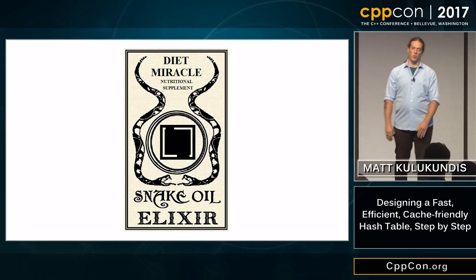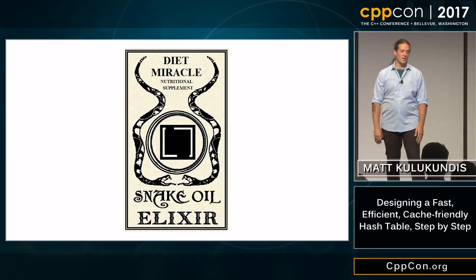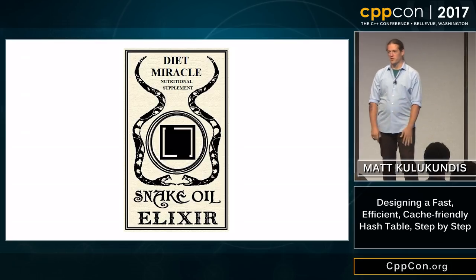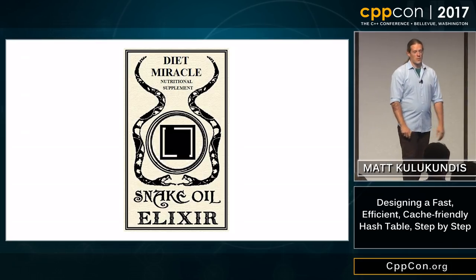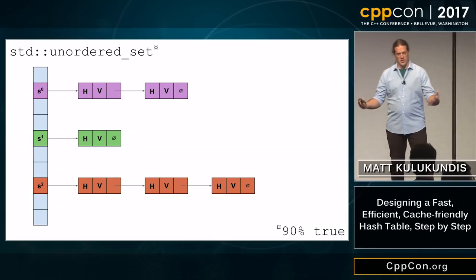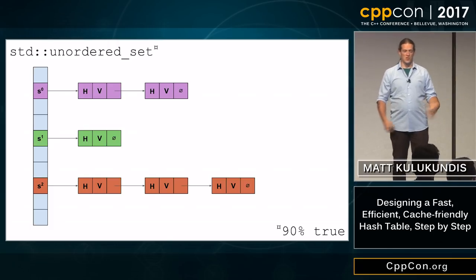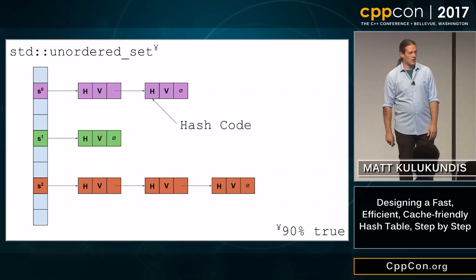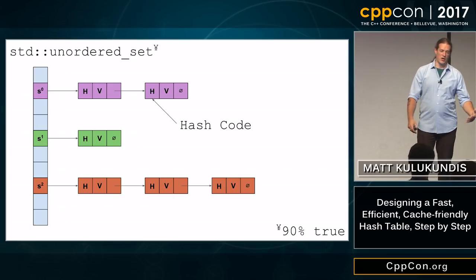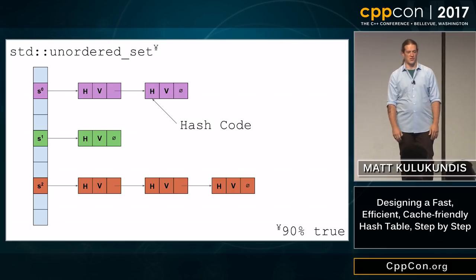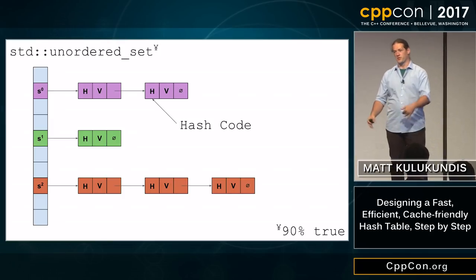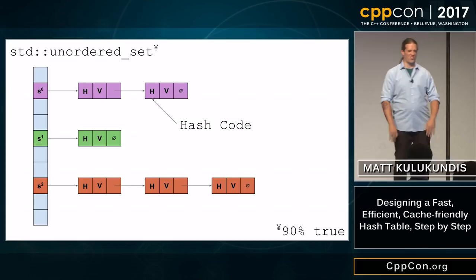The H is your hash code — it is 64 bits in all its glorious splendor. I don't care about 32-bit platforms; whenever I say 64, make some mental adjustments. This is the actual value, the thing that we want to store. Because the value is in a separate allocation, we say that it has pointer stability — no matter what happens to the internals of your hash table, the value doesn't move. This is a property guaranteed by the standard. The null pointer symbol indicates the end of linked lists.